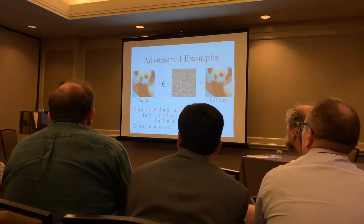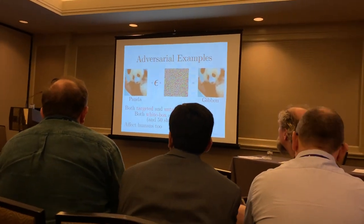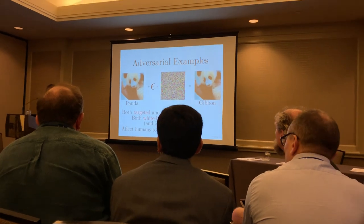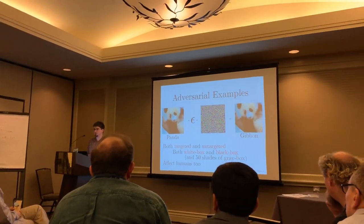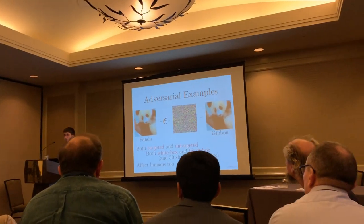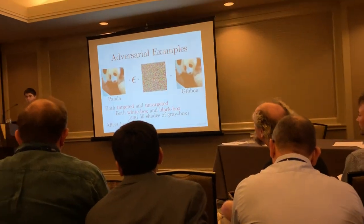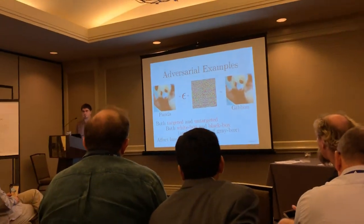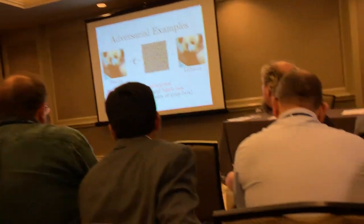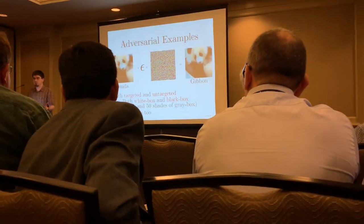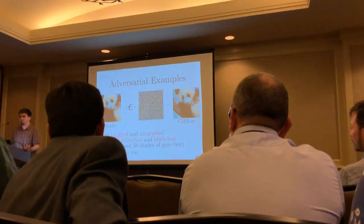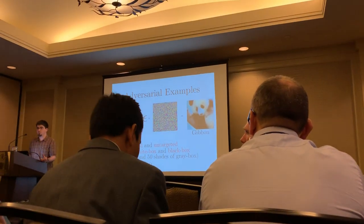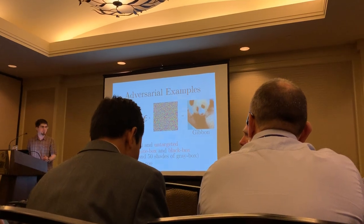An adversarial example is an input to a machine learning model that is intentionally designed to make the model make a mistake. The kind most often studied is where you make a very small change to an image and the model then produces the wrong answer.